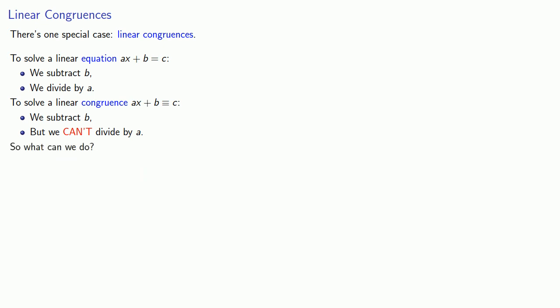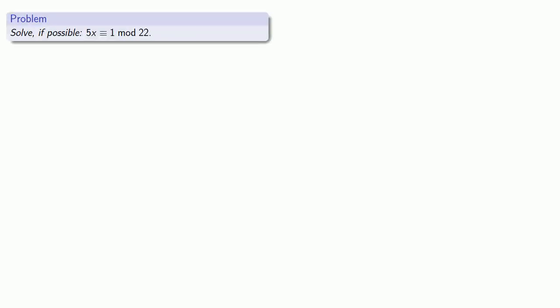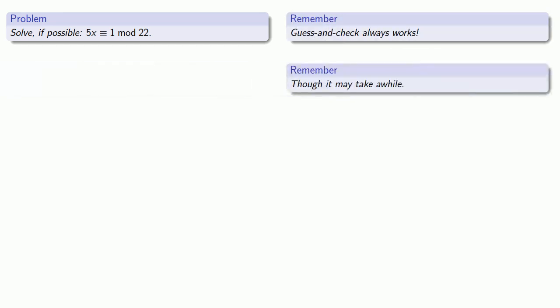So what do we do instead? Well, as always, let's try and see what happens. Let's try to solve, if possible, 5x congruent to 1 mod 22. And something that's important to remember: guess and check always works, though it may take a while.